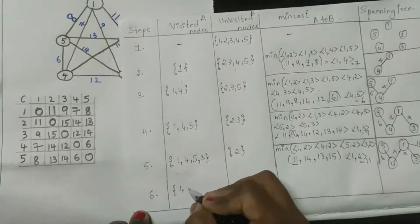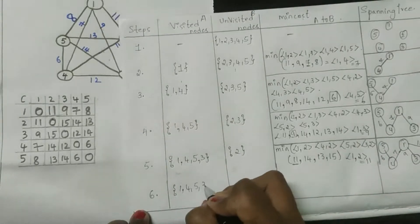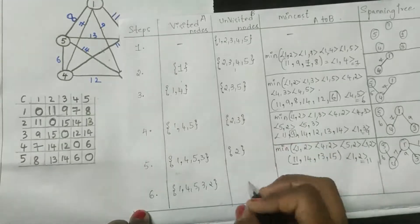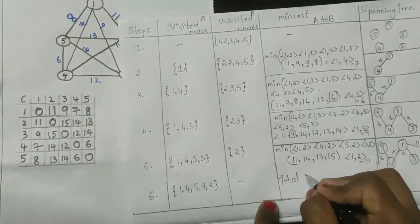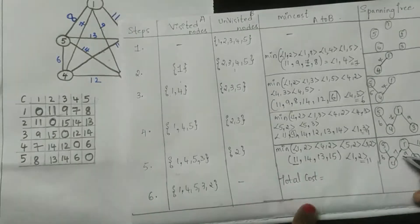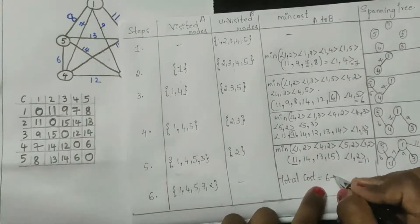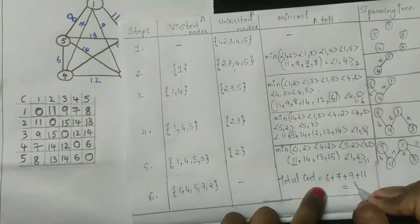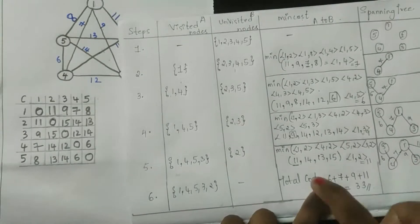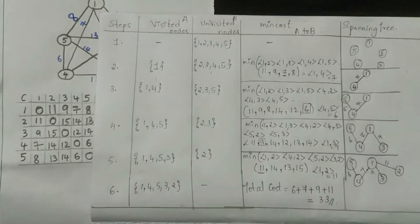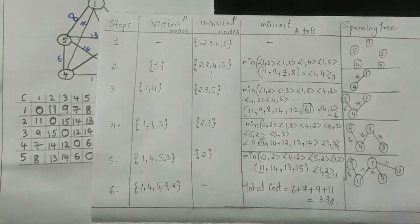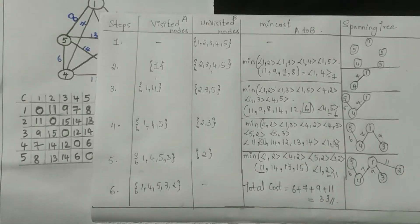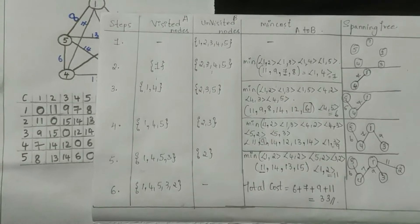In step six, all nodes — one, four, five, three, and two — have been visited. The total minimum cost is six plus seven plus nine plus eleven, which equals 33. So the total cost of the minimum spanning tree is 33. This is how you solve Prim's algorithm. Thank you for watching — please subscribe, like, and share.